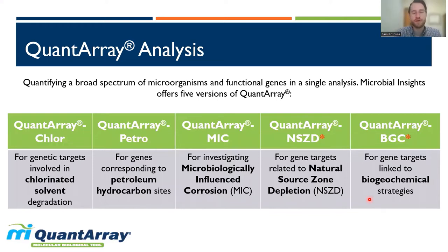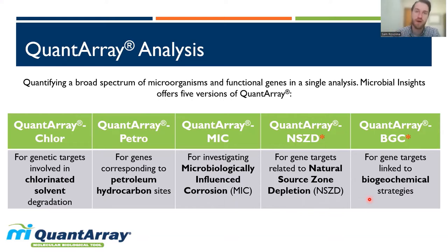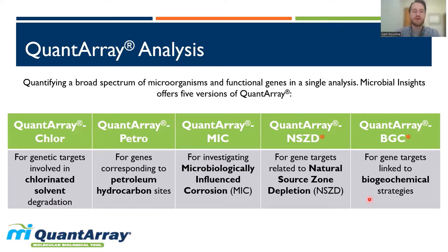We have a number of different QuantArrays. We began many years ago with QuantArray Chlor, specific to sites with chlorinated solvent impacts. We have QuantArray Petro for petroleum hydrocarbon sites. Shortly after we introduced QuantArray MYC, useful for showing the potential for microbiologically influenced corrosion — in this case we're looking for bad microbes that can cause problems, whereas for our other QuantArrays we're looking for good microbes that can help us remediate. Now we have two newer versions: QuantArray NSCD for natural source zone depletion, which I'll talk about in depth today, and QuantArray BGC for biogeochemical analysis — a strong way of enhancing the biogeochemical data you're already collecting at your site.